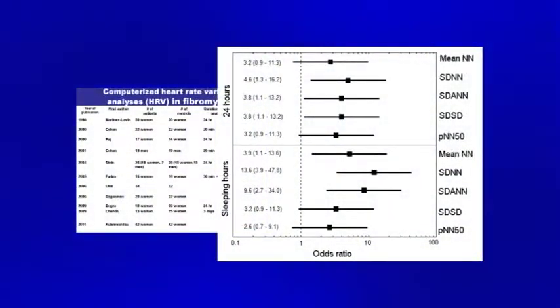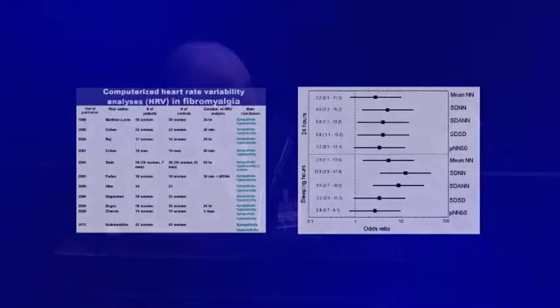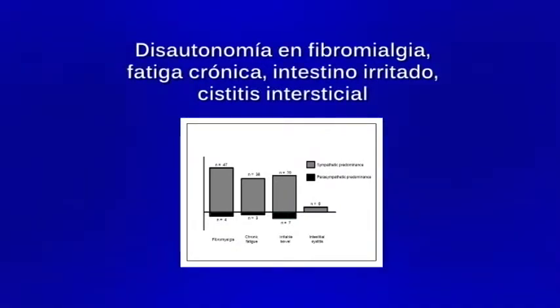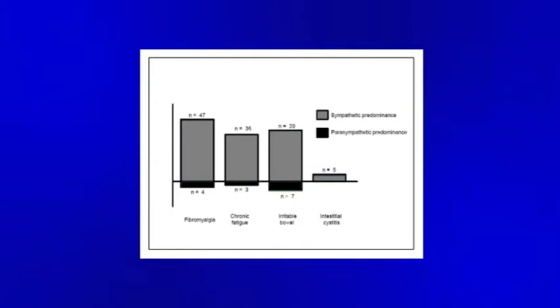Junto con los doctores Infante y Lerma, nos enfocamos a estudiar la noche por medio de este instrumento y vimos que las alteraciones en la noche son mucho más prominentes que durante el día, lo que podría ser un biomarcador de la enfermedad. No solo encontramos esto, sino también una correlación entre las alteraciones de la variabilidad de la frecuencia cardíaca y la gravedad del padecimiento. Además, una revisión sistemática muestra la alteración del sistema adaptable complejo en otros padecimientos traslapados con la fibromialgia, como el síndrome de fatiga crónica y el intestino irritable: en la inmensa mayoría hay hiperactividad simpática las 24 horas.